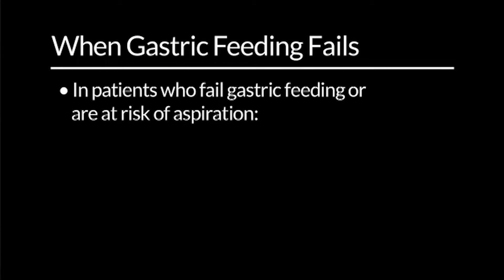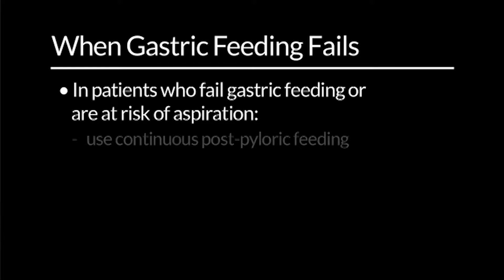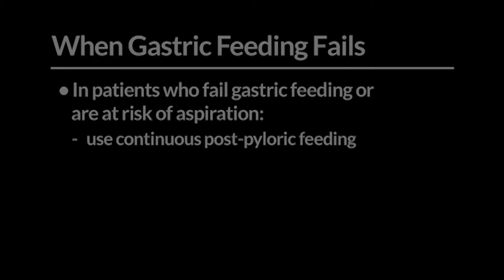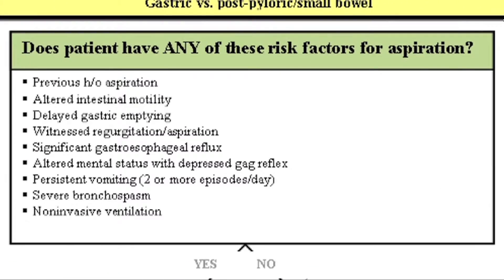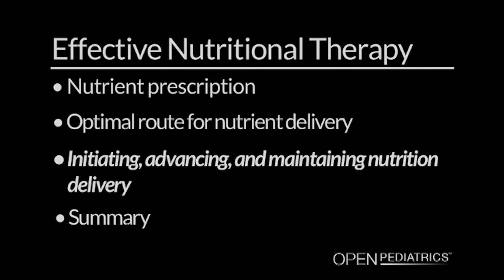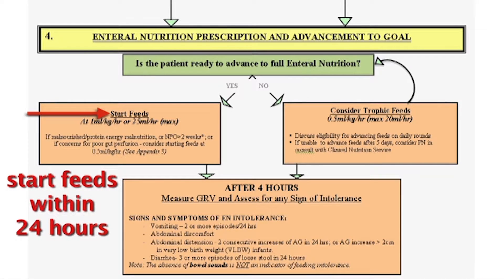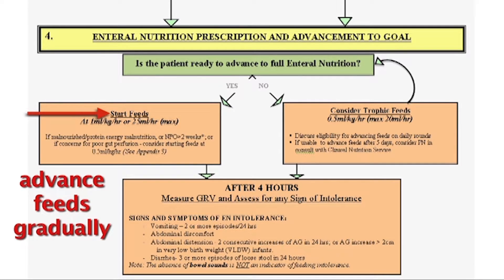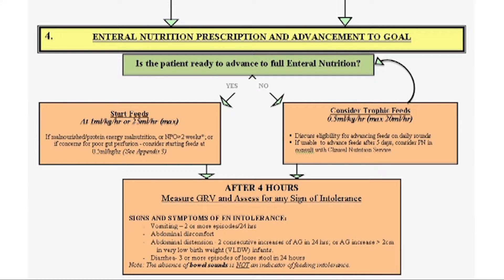At Children's Hospital Boston, we prefer to feed patients in the stomach using continuous gastric feeding. However, in patients who have failed gastric feeding or are perceived to be at risk of aspiration of gastric contents, we use the post-pyloric route continuously — in approximately 18 to 20 percent of patients. The slide depicts our rationale for selecting patients at risk for aspiration who are likely to benefit from post-pyloric feeding.